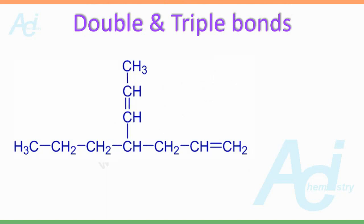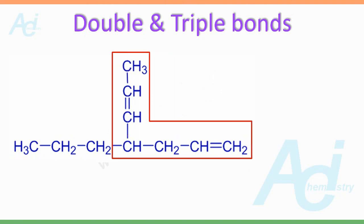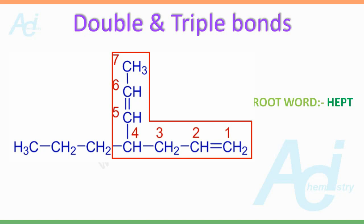Now we will see the role of double and triple bonds while deciding the parent chain. Look at this molecule — there are two carbon chains with equal length, that is with 7 carbon atoms. The first one is the straight one with 7 carbons, and the second one is L-shaped, also having 7 carbon atoms. The second chain is to be chosen as the parent chain since it contains 2 double bonds, and the root word is hept. There is a CH2CH2CH3 side chain referred to as propyl group.